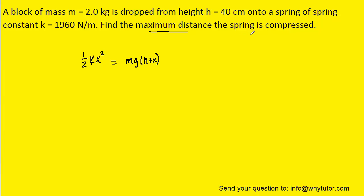We recall the question is asking us for the maximum distance that the spring is compressed, so we're basically being asked to solve for x. To do that we can go ahead and multiply both sides of the equation by 2. We can then distribute the 2mg into the parentheses, and then since this is a quadratic equation we need to set it equal to zero, so let's subtract the two terms on the right over to the left side.